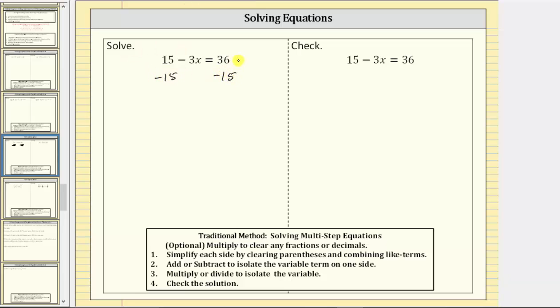Again, we subtract 15 on both sides so the result is an equivalent equation. Now we simplify. 15 minus 15 is zero. The left side simplifies to negative three x. On the right side, 36 minus 15 equals 21.